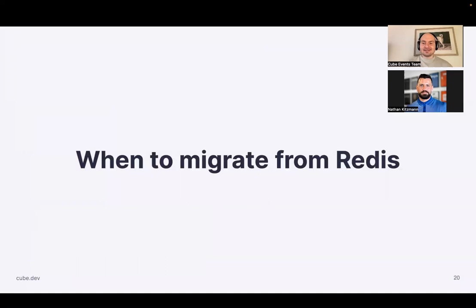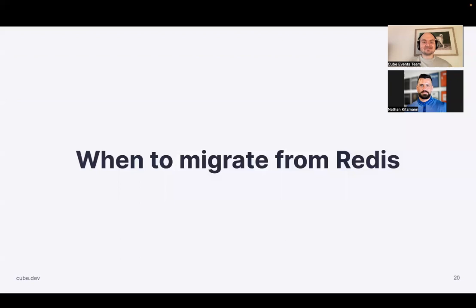With that, I'd like to answer the question of when the right time to migrate is — and the answer is today. This is the release schedule. More than two weeks ago, we already released version 0.31.60, which I call the Redis-free preview version. It fully supports working without Redis. The default settings are intact, so you can upgrade to this version or any version in the 0.31 branch and everything will work as before. But if you wish to use only Qube Store and stop using Redis, you can just set the environment variable `CUBEJS_CACHE_AND_QUEUE_DRIVER` equals `cubestore`, and then you don't need Redis.